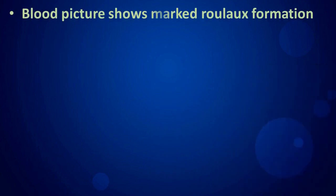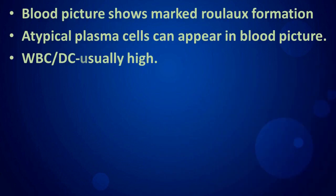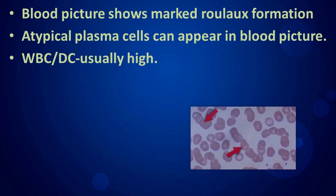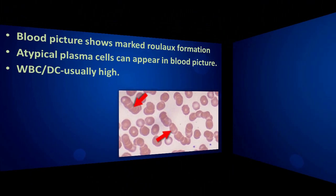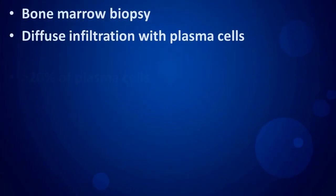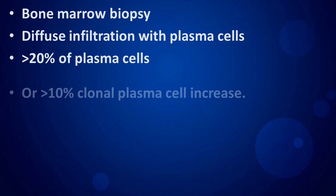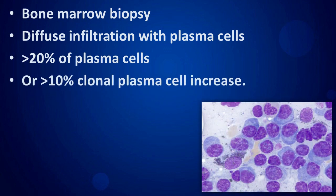The blood picture shows marked rouleaux formation. Atypical plasma cells can appear in the blood picture; WBC and differential count are usually high. Bone marrow biopsy shows diffuse infiltration with plasma cells — more than 20 percent plasma cells, or more than 10 percent clonal plasma cell increase.